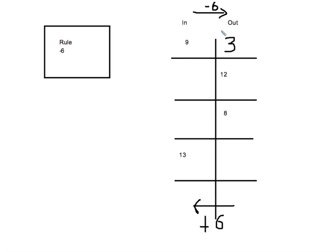Or 13 minus 6 would give me 7. These harder ones, I know that I'm doing the opposite — I'm going backwards — so instead of minusing 6, I'm going to plus 6. 8 plus 6 is going to give me 14. And 12 plus 6 is going to give me 18.